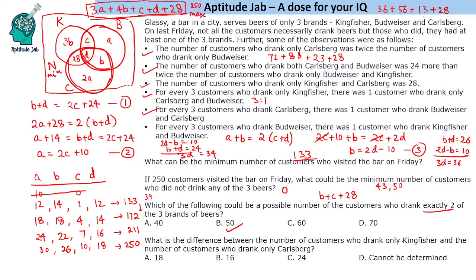The last question asks the difference between the number of customers who drank only Kingfisher and those who drank only Karlsberg. Only Kingfisher is 3B and only Karlsberg is 2A, so we need 3B minus 2A. In case 1: 42 minus 24 = 18. In case 2: 3×18 minus 2×18 = 18. In case 3: 66 minus 48 = 18. Irrespective of the values of A and B, the difference is always 18. So the answer is 18.